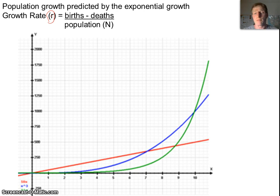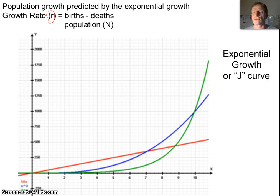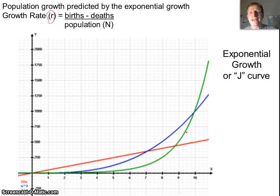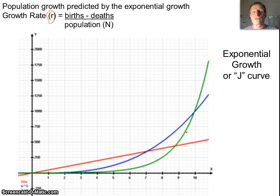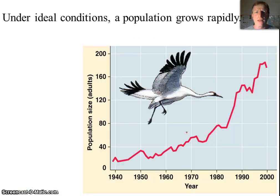We can see populations sometimes grow at a constant rate, but oftentimes they grow at an exponential rate. Sometimes we call this a J-curve, because it looks like the letter J. Populations, as they increase, tend to increase not at a constant rate, but sometimes at an ever-increasing rate, especially if they've got plenty of resources in the area.